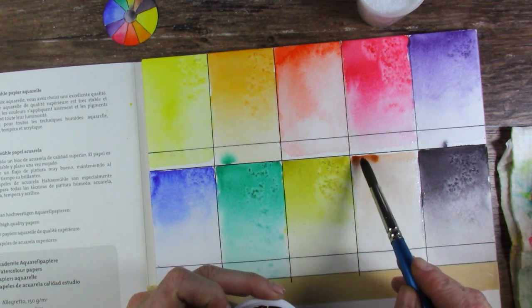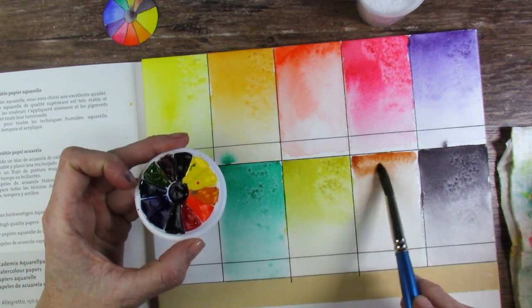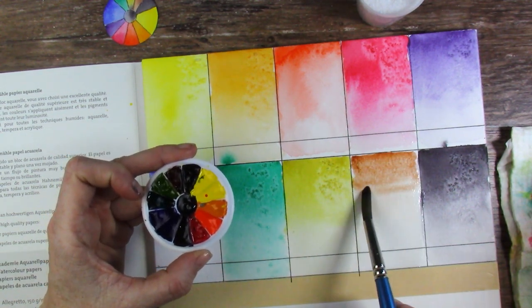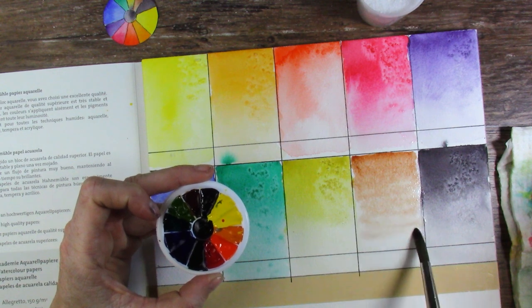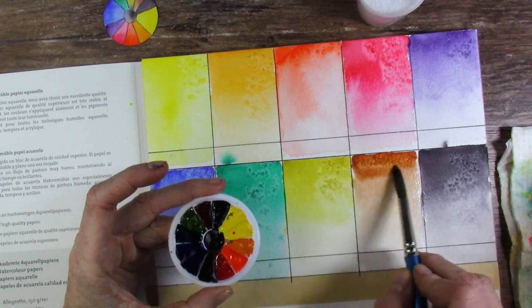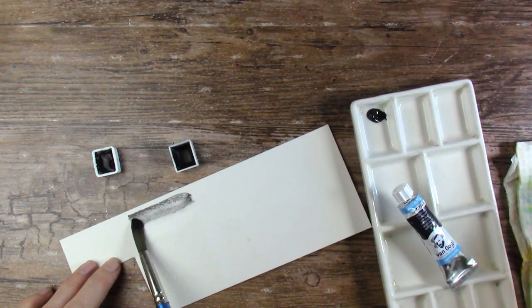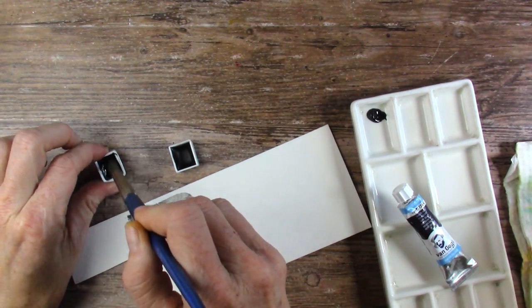Transparent red iron oxide, PR101. Definitely reminds me of a lot of the burnt siennas that I enjoy using because it takes a little bit to get a heavy laid down of pigment. But the color is beautiful. And a lot of the burnt siennas I like are also PR101. So no big mystery there.